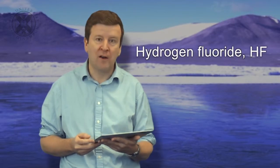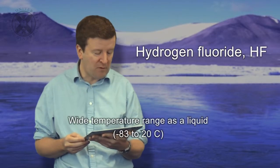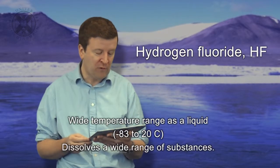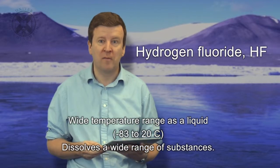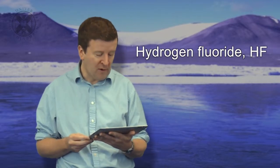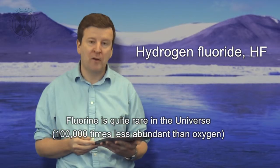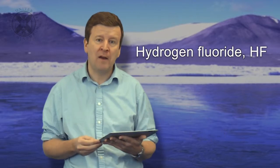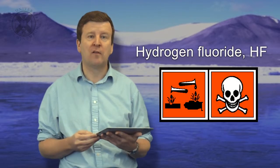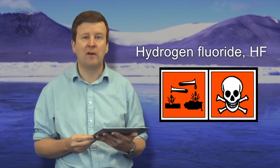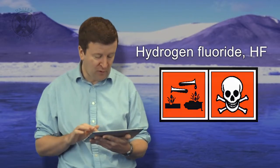There are other types of solvents that have been proposed for life as well, such as hydrogen fluoride. Hydrogen fluoride, when it's a liquid, has a very wide temperature range — from minus 83 to plus 20 degrees centigrade — and it also dissolves a wide range of substances. The problem with hydrogen fluoride is that fluorine is quite rare in the universe, being 100,000 times less abundant than the oxygen necessary to form water, and it's rather aggressive at destroying organic compounds. So on the face of it, liquid hydrogen fluoride also doesn't look like a particularly good solvent for life.